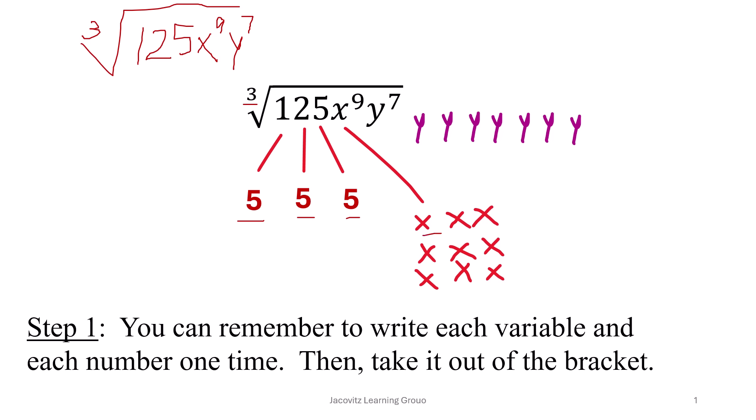Over here you have 1, 2, 3, 4, 5, 6, 7, 8, 9 x's, and over here you have 7 y's: 1, 2, 3, 4, 5, 6, 7. So they're all written out.